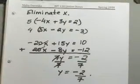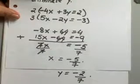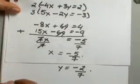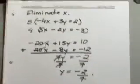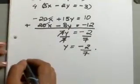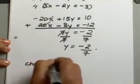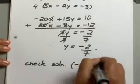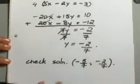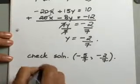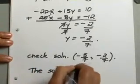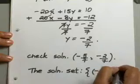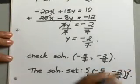With both our x and y, we ended up with fractions. That's the reason why we use double elimination here. It is good practice to check your answers. Check your solution with negative 5 sevenths and negative 2 sevenths, and you will see that you end up with a true statement for both equations. We can say your solution set is the ordered pair negative 5 sevenths and negative 2 sevenths.